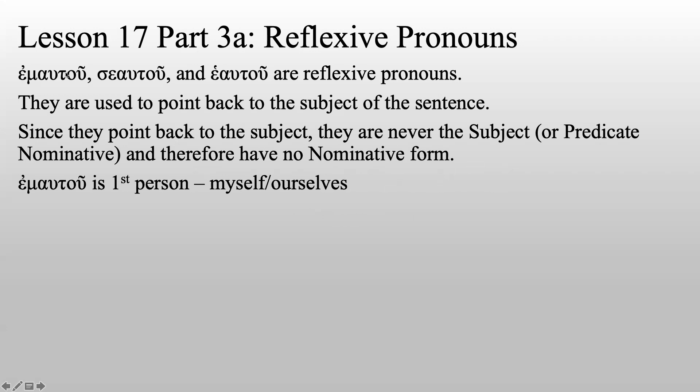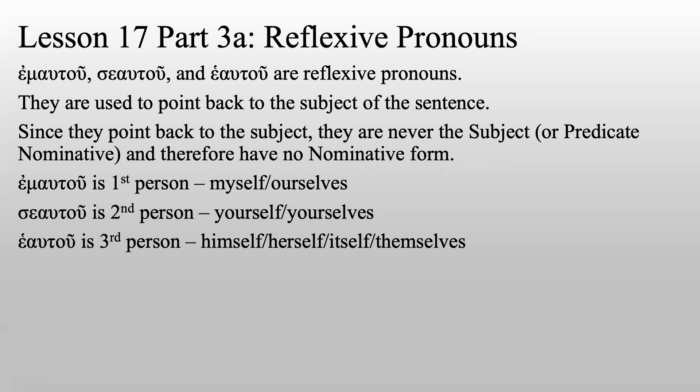Emautu is first person. It means myself or ourselves. Seau tu is second person. It means yourself or yourselves. Heau tu is third person. It means himself, herself, itself, or themselves.